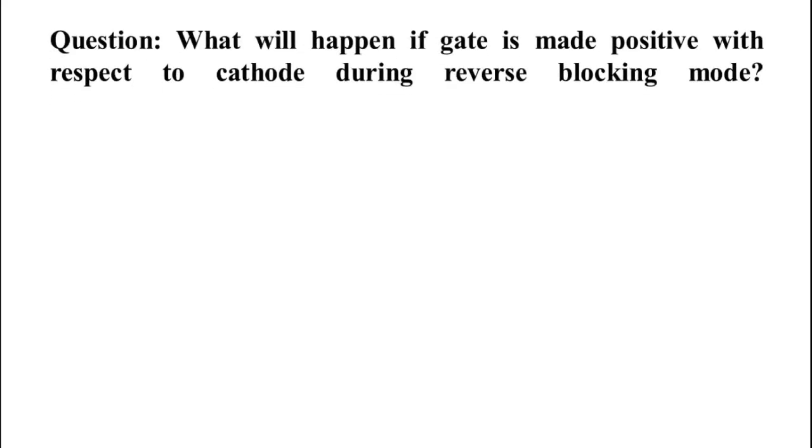Now take a question. What will happen if gate is made positive with respect to cathode during reverse blocking mode of thyristor? Or we can say that what happens when positive gate pulses are applied at junction J2 or gate during reverse blocking mode?